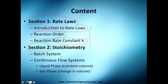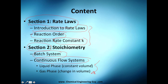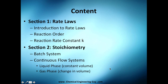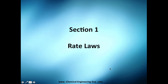Section 2 is the stoichiometry we need to use in order to be able to apply these rate laws. We're going to see batch systems and continuous flow systems. Not only that — our stoichiometry is going to change drastically if we use liquid phase, where constant volume makes it easier to model, versus gas phase, where the change in volume means we use the ideal gas law with temperature, pressure, and volume. We'll see that later, but let's start with section 1, rate law, and hopefully you like the videos.